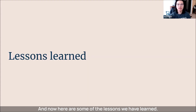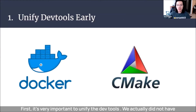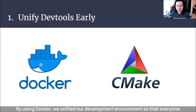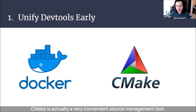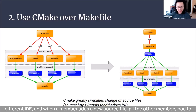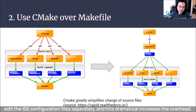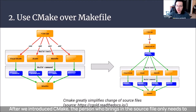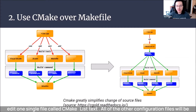Here are some of the lessons we have learned. First, it's very important to unify your dev tools. We did not have a unified toolset — some of us were using Mac, some Linux. By using Docker, we unified our development environment so everyone would have the same version of the same software such as CMake and SSH. Before CMake, each team member was using a different IDE, and when someone added a new source file, all other members had to edit IDE configuration files separately. After we introduced CMake, the person who adds a source file only needs to edit one file called CMakeLists.txt, and all configuration files generate dynamically, greatly reducing overhead.